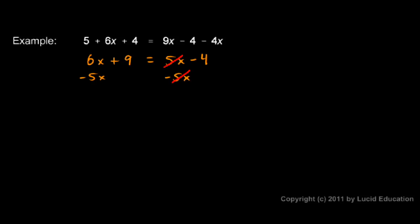On the left now I have 6x minus 5x which is x, and I still have the plus 9. So my left side is x plus 9. On the right side the 5x and the minus 5x have cancelled out and I still have that minus 4. So don't forget that negative sign right there. The right side is negative 4.